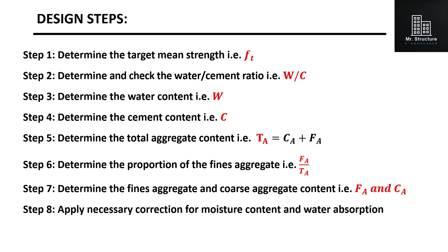In step six, you determine the proportion of fine aggregate, that is the ratio of fine aggregates to the total aggregates. Using results of steps five and six, in step seven, you determine the fine aggregate content FA and coarse aggregate content CA. At last, in step eight, you perform necessary corrections for the free moisture content and water absorption for both fine and coarse aggregates. Step eight is performed only if the problem provides the water absorption and moisture content data for the aggregates. To understand how each step is performed, let's solve a problem using these steps.